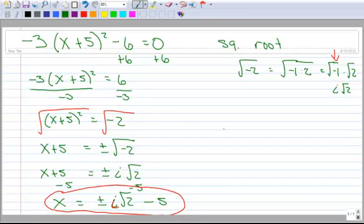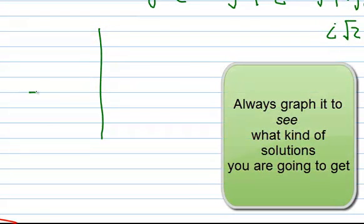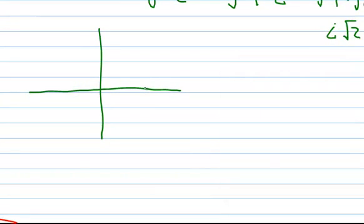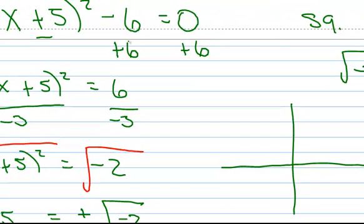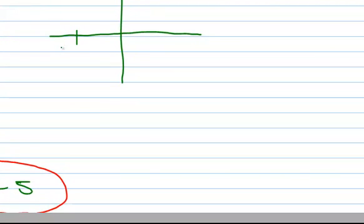Now we want to graph this and get a picture of it. And it might be in your best interest to graph it before you solve it. And that way you know if you're dealing with complex or real solutions. So to graph this, you could obviously use your calculator, but you don't have to, because this is in vertex form. So I know that the vertex is -5.